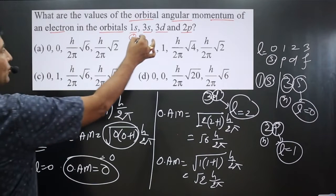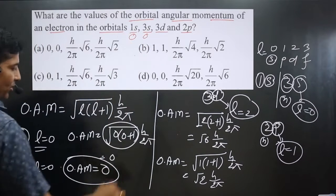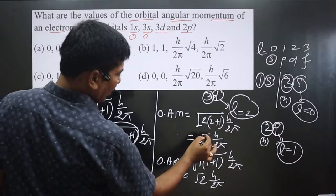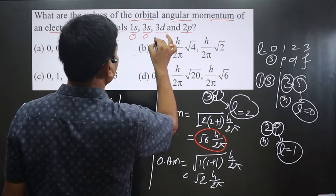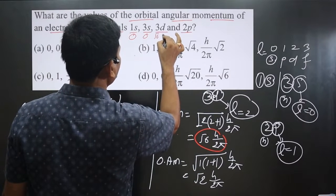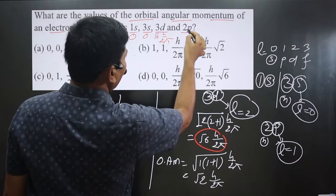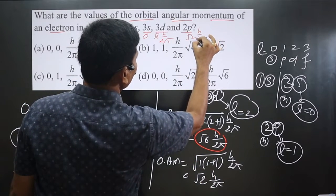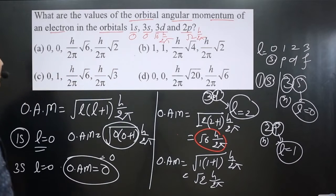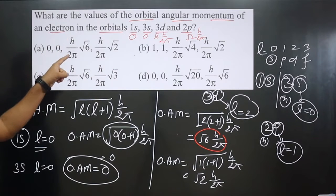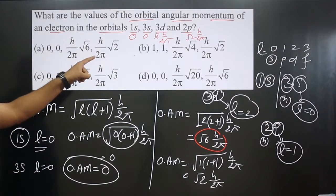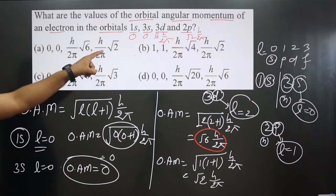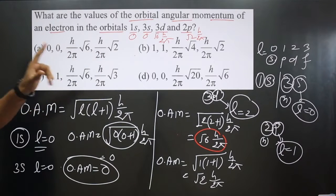Summarizing all results: 1s → 0, 3s → 0, 3d → √6 × h/2π, and 2p → √2 × h/2π. Checking the options: 0, 0, √6 × h/2π, √2 × h/2π — option A is correct.